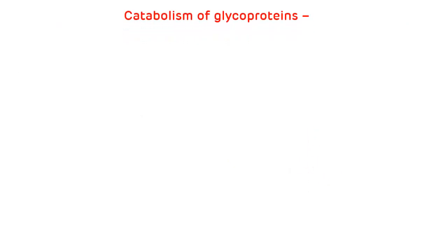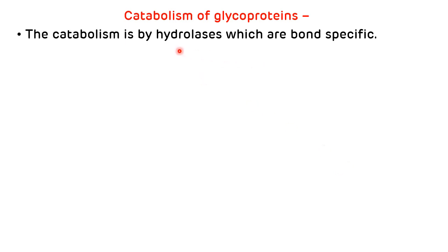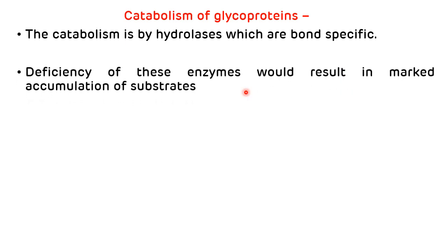Now, catabolism of glycoproteins. Glycoproteins are catabolized by a panel of enzymes which are bond-specific hydrolases. These hydrolases catabolize the glycoproteins, and any deficiency of these enzymes leads to the accumulation of various substrates related to the glycoproteins.